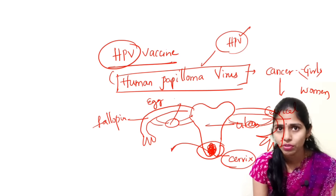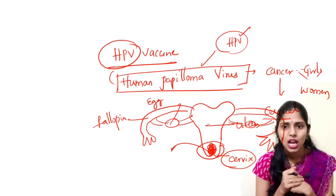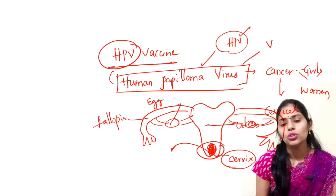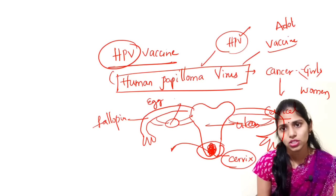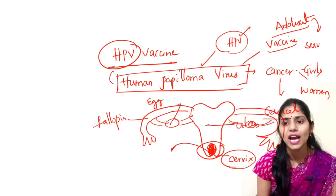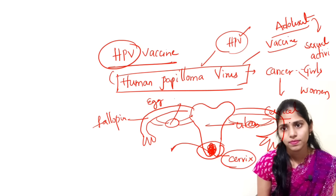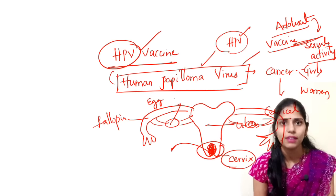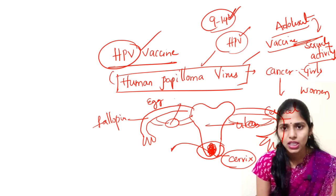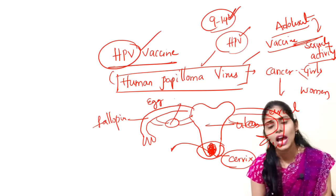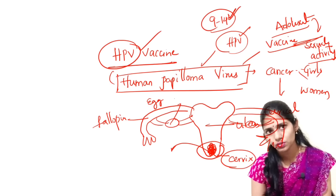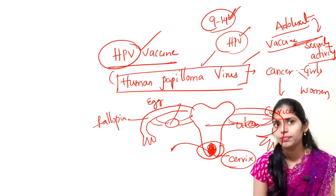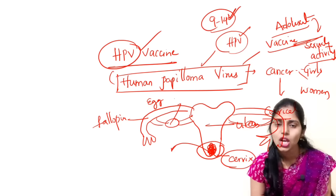Recently we developed an HPV vaccine to protect women from cervical cancer. An important point is that you have to use this vaccine in adolescent age — before the start of sexual activity. Girls should take this vaccine, ideally between 9 to 14 years of age, for it to be effective. After sexual activity has started, there is no use of this vaccine. Sometimes even before pregnancy, some doctors recommend taking this human papillomavirus vaccine.